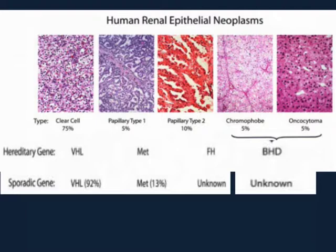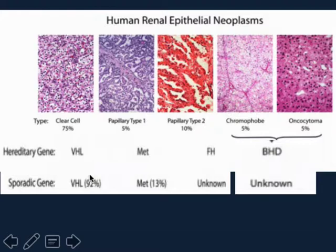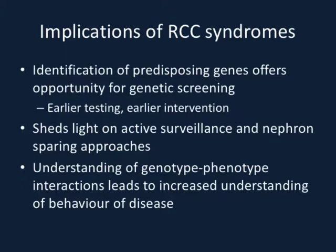Comparing hereditary genes to sporadic genes across the different subtypes — VHL, MET, fumarate hydratase, and Birt-Hogg-Dubé — we now know the hereditary gene in BHD is folliculin, not called BHD. There's a lot of homology, especially in clear cell RCC, where VHL seems to be sporadically mutated in almost 90% of tumours, either a distinct mutation in VHL or some anomaly of chromosome 3 where VHL is found. For MET, this figure describes only 13% sporadic mutations, but when you include chromosome 7 large translocations or trisomy of chromosome 7, that number increases to almost 80% of sporadic type 1 papillary RCCs with some aberration of MET.